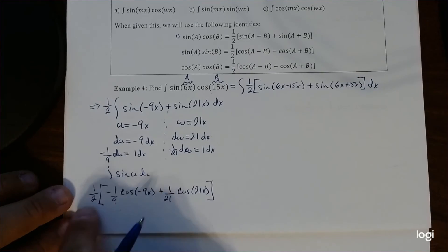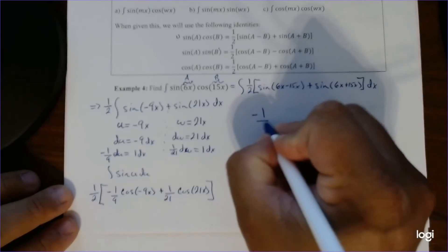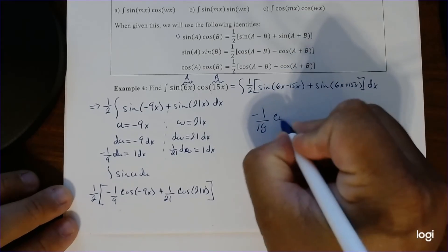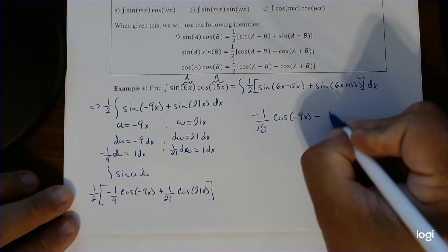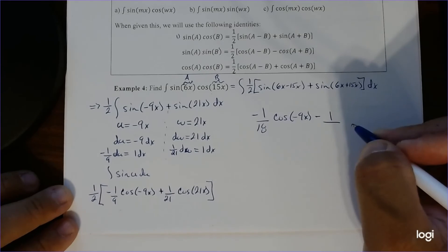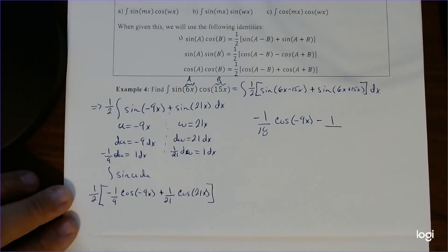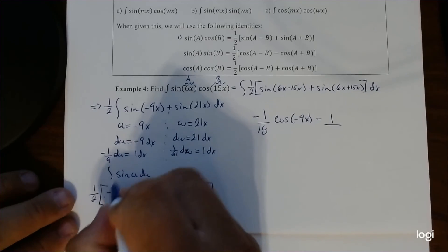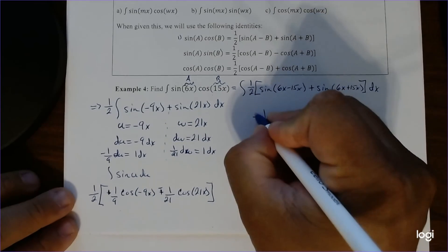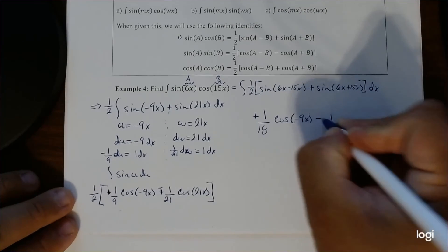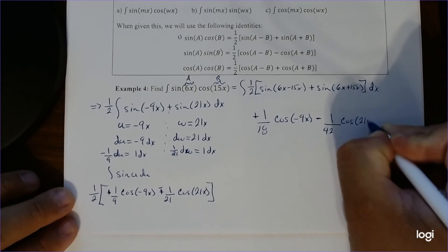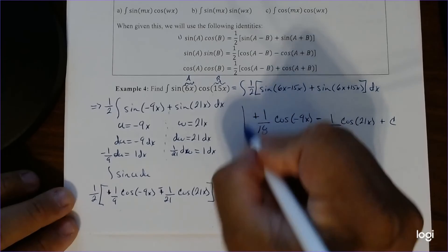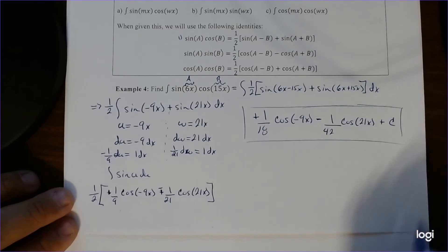And then finally distribute the 1 half to get our final answer. So negative 1 over 18 cosine of negative 9x. Oh no! Integral of sine is negative cosine. So this is negative. This is negative. So this should be negative. Yeah. Minus 1 over 42 cosine of 21x. And then plus c. And there we go.